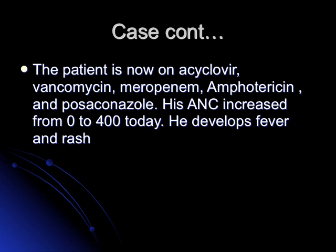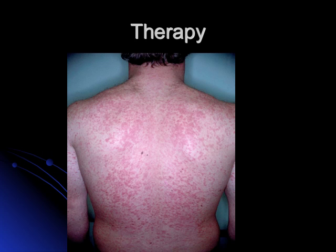The ANC increased from zero to 400 and the patient develops fever and a rash — that is immune reconstitution. It is mostly seen in patients who recover counts very quickly. These patients may present with fever and rash, fever and ground-glass pneumonia, or fever and renal failure. Although the ANC is recovering and infection risk is lower, you still need to rule out infection.